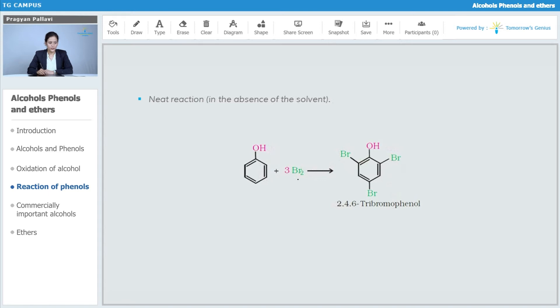If we are simply using bromine without any solvent, then we are going to get 2,4,6-tribromophenol.